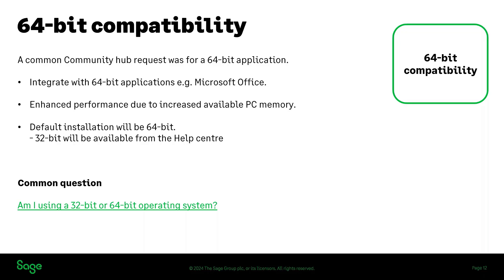So we'll now cover 64-bit compatibility. This was a common Community Hub request. It was a request for a 64-bit compatible application, and now Sage 50 accounts can integrate with 64-bit applications. The most common example is Microsoft Office — the likes of Outlook and Excel. You will have enhanced performance due to increased available PC memory. Default installation will give you 64-bit. 32-bit will still be available but you will have to get that manually from the Help Centre. Please note there will no longer be automatic update prompts in the software for 32-bit installations.